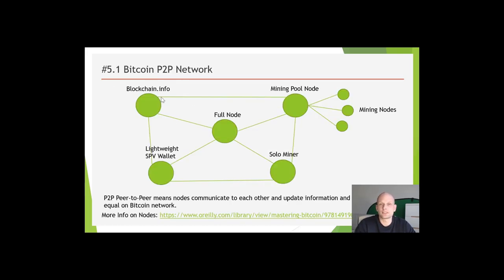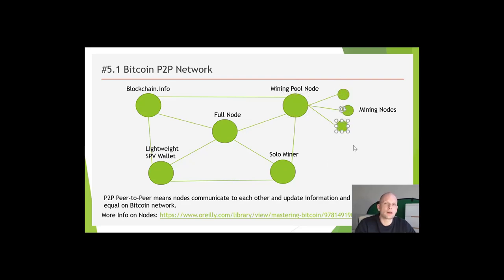Now let's talk about Bitcoin nodes. I've outlined different types on this slide and I'll provide a link at the bottom for more technical details. The Bitcoin network is made up of different nodes which are peer-to-peer connected using the Transfer Control Protocol, and they can use different protocols to connect to each other. All nodes have different functionalities — for example, a mining pool node has mining functionality, and there could be thousands or millions of nodes connected to that mining pool, all doing mining. All nodes are constantly exchanging information with one another.